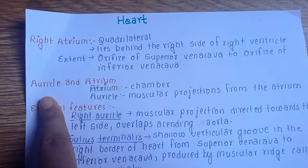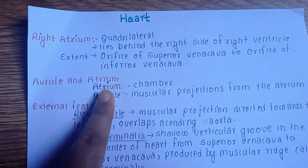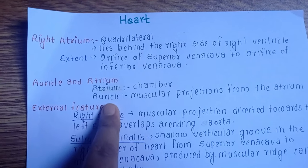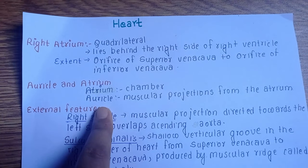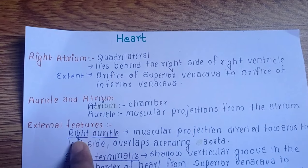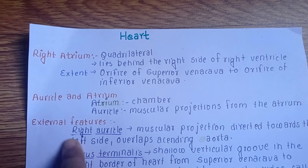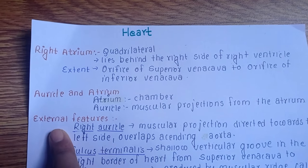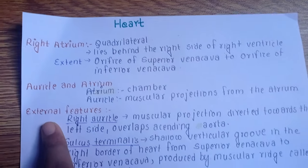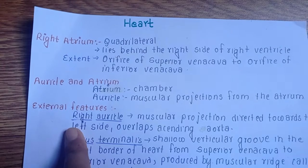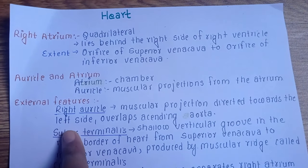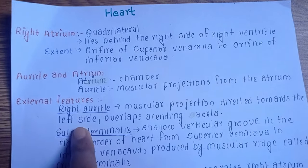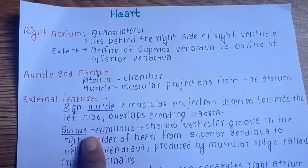We may get confused between auricle and atrium. The atrium is the chamber, while the auricle is the muscular projection from the atrium. The first external feature is the right auricle — it is a muscular projection directed towards the left side and it overlaps the ascending aorta.